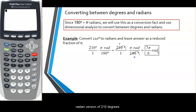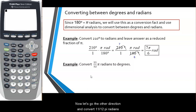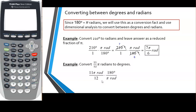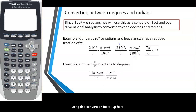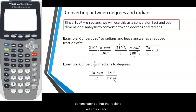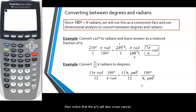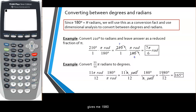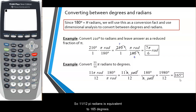Now let's go the other direction and convert 11π/12 radians into degrees. We write 11π/12 radians in ratio form, then multiply by a ratio with 180 degrees in the numerator and π radians in the denominator, so the radians and π both cancel. Multiplying across gives 1980 over 12, and the remaining unit is degrees, which gives us 165 degrees. So 11π/12 radians is equivalent to 165 degrees.